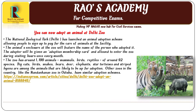Big cats, birds, snakes, bears, deer, elephants, star tortoises, etc. are among the animals available for adoption. Other zoos in the country, like Nandankanan Zoo in Odisha, have similar adoption schemes.